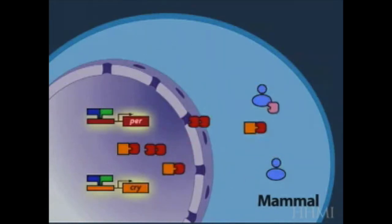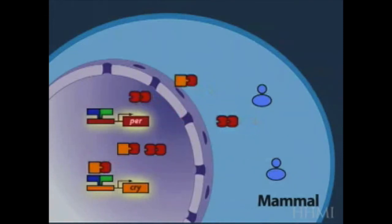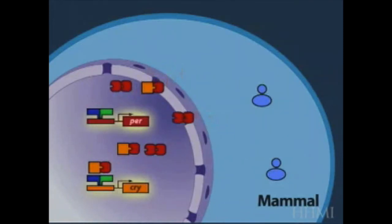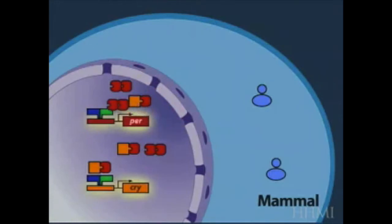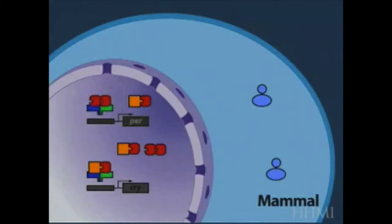PER-PER and PER-CRY dimers translocate into the nucleus. The dimers interact with BMAL1 or CLOCK to block activation, creating a negative feedback loop. PER and CRY proteins, which are negative regulators, block transcription by their own genes.